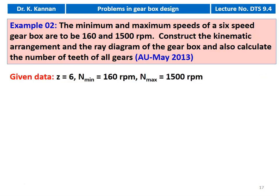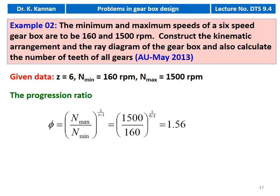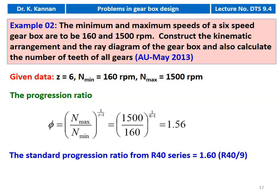Writing down the given data: number of speed steps Z = 6, minimum speed N_min = 160 RPM, maximum speed N_max = 1500 RPM. The motor speed is not given. We calculate the progression ratio φ = (N_max / N_min)^(1/(Z−1)) = (1500/160)^(1/5) = 1.56. The standard progression ratio from the R40 series is 1.6, that is R40/9. The number of stages U = 2, and the structure formula is 2×3.